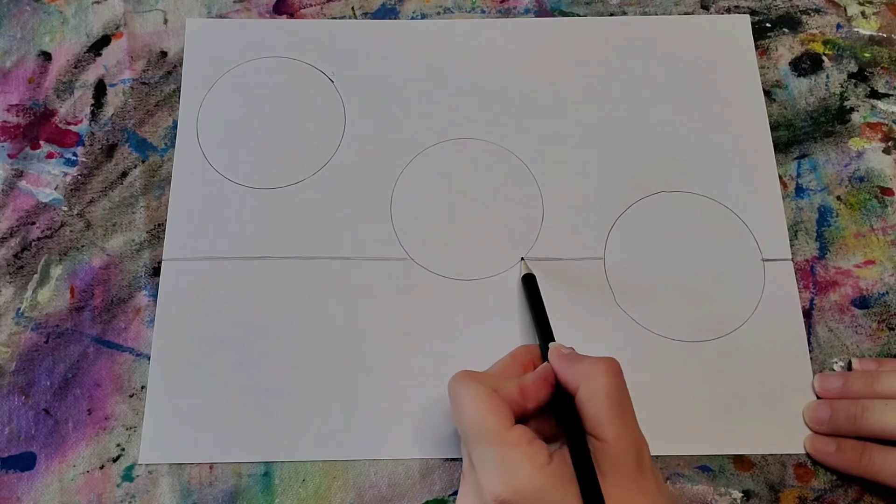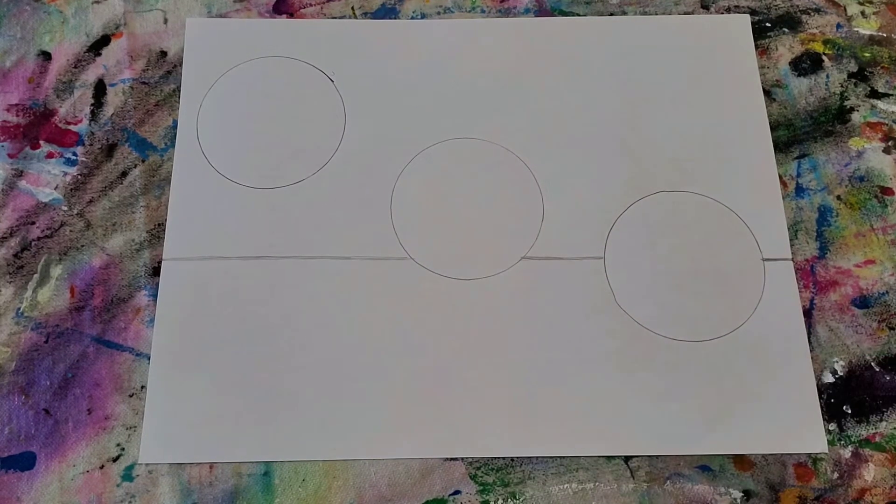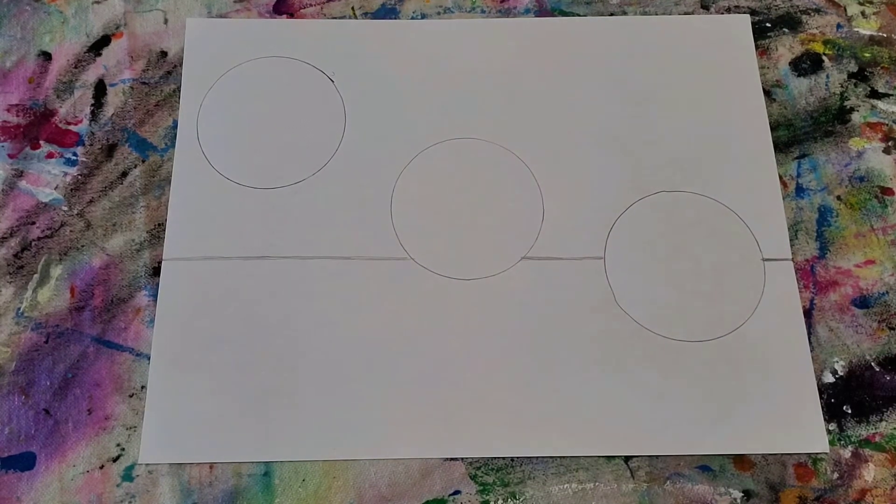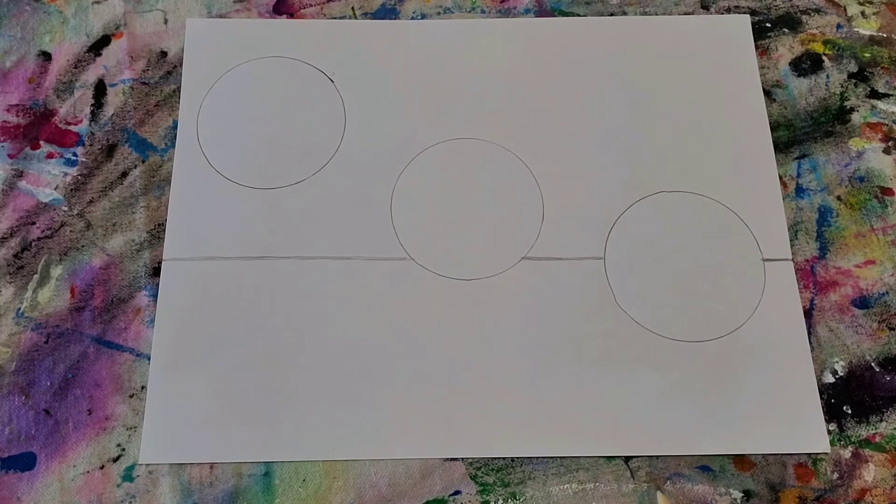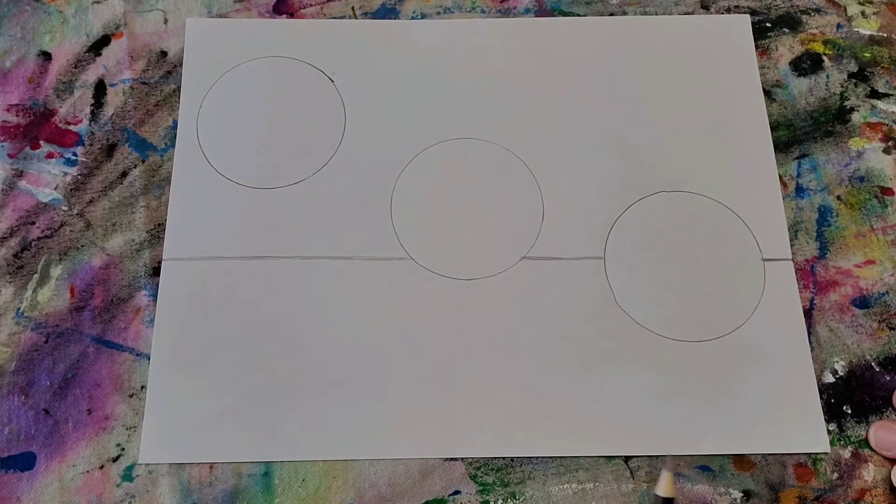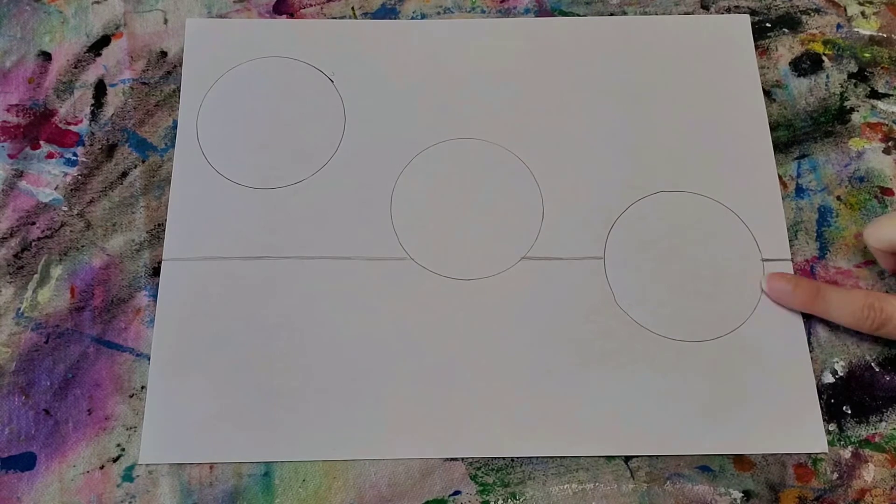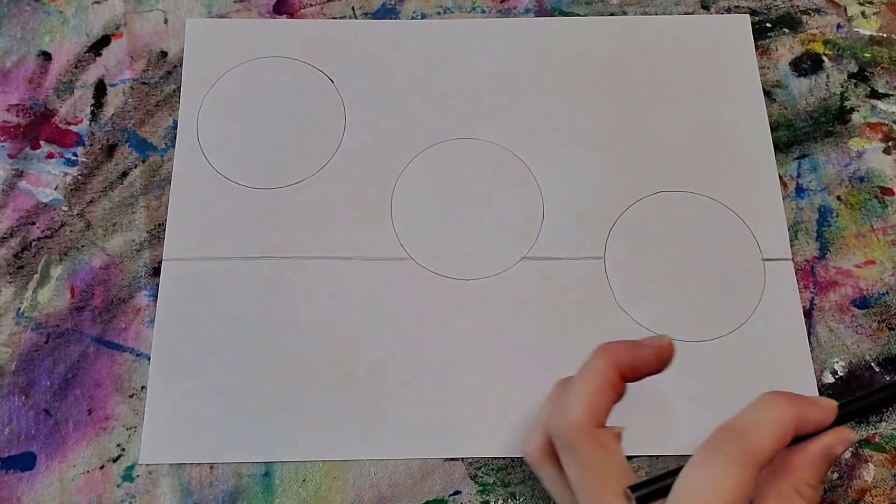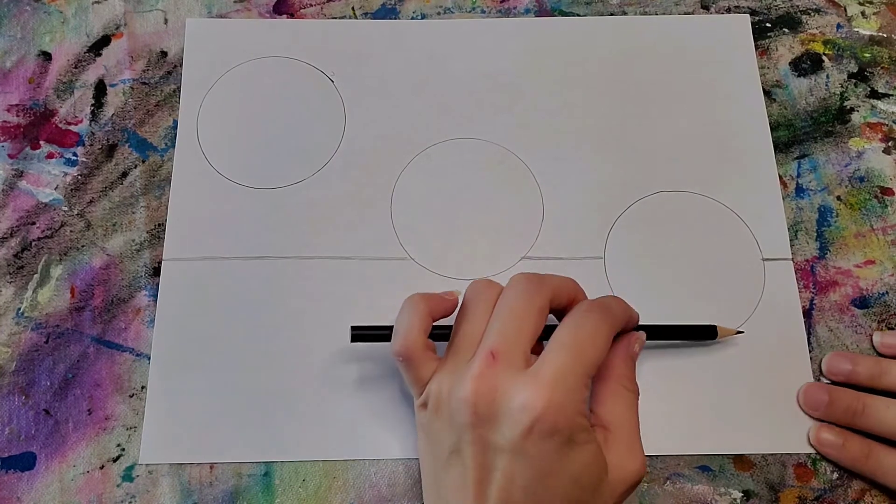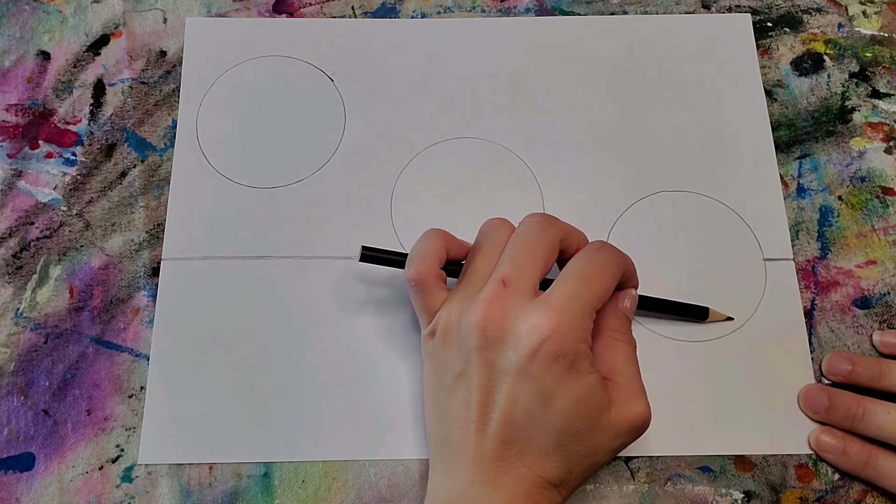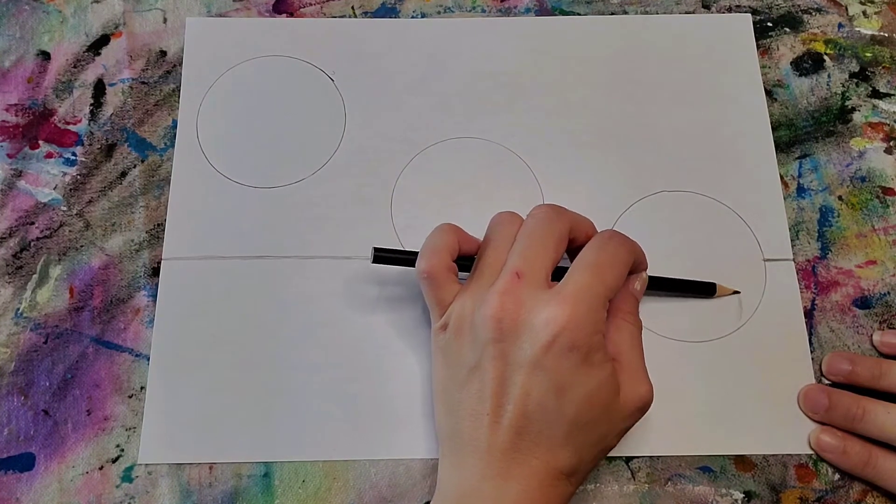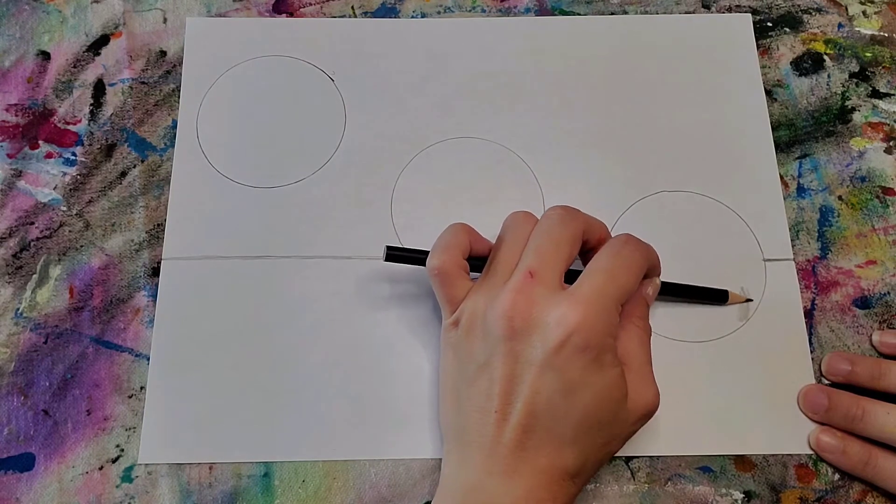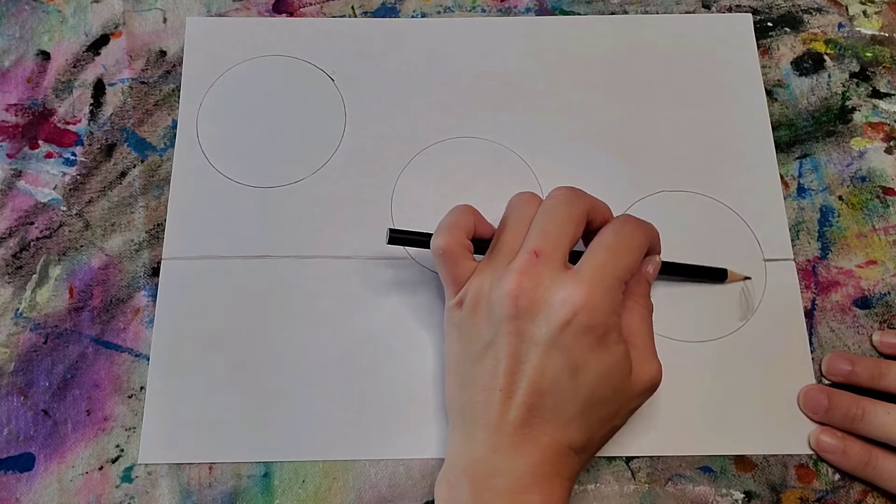All right, so now we're going to start shadowing our first circle. I'm going to turn my pencil on its side and I'm going to start at the bottom here. Watch me for a little bit first before you dive in.